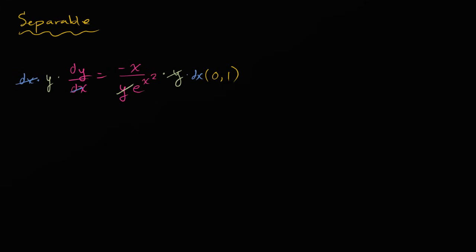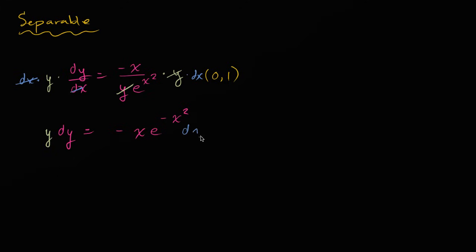This cancels, and so we are left with y dy is equal to negative x e to the negative x squared dx. Now why is this interesting? Because we can integrate both sides. This also highlights why we call this separable — you won't be able to do this with every differential equation. You won't be able to algebraically separate the y's and dy's on one side and the x's and dx's on the other side, but this one we were able to. That's why this is called a separable differential equation.